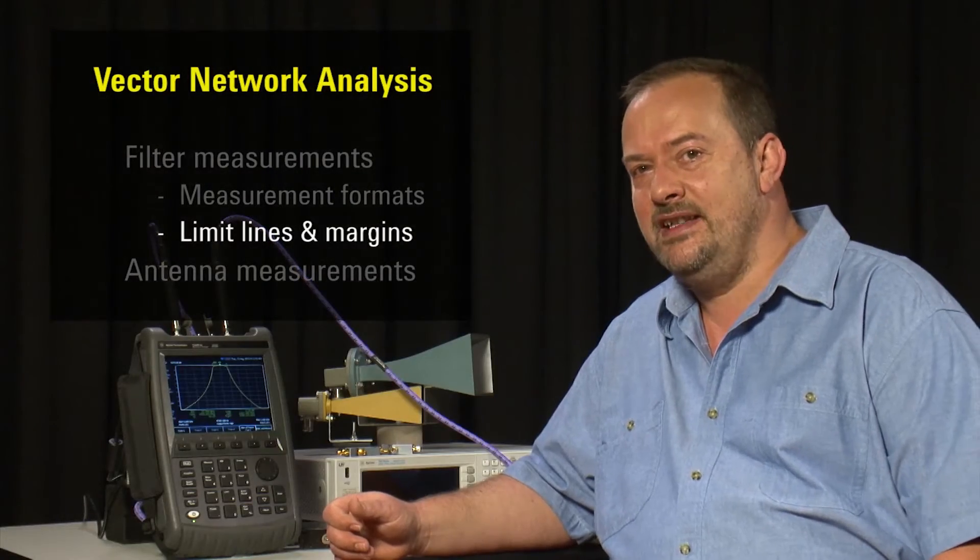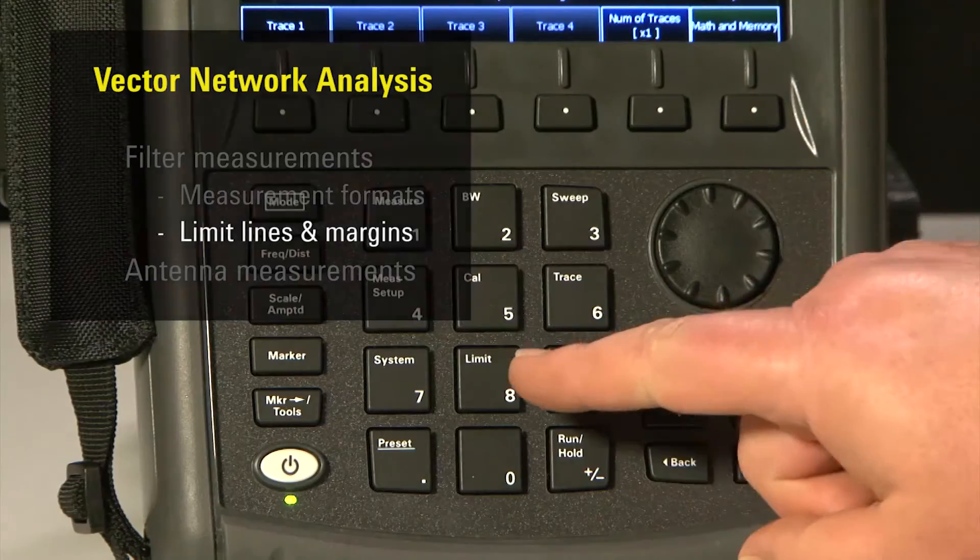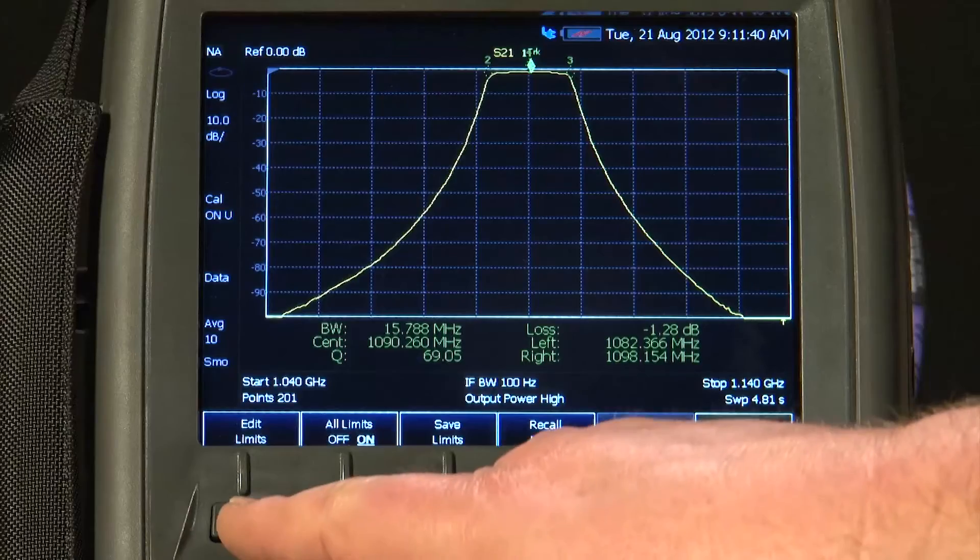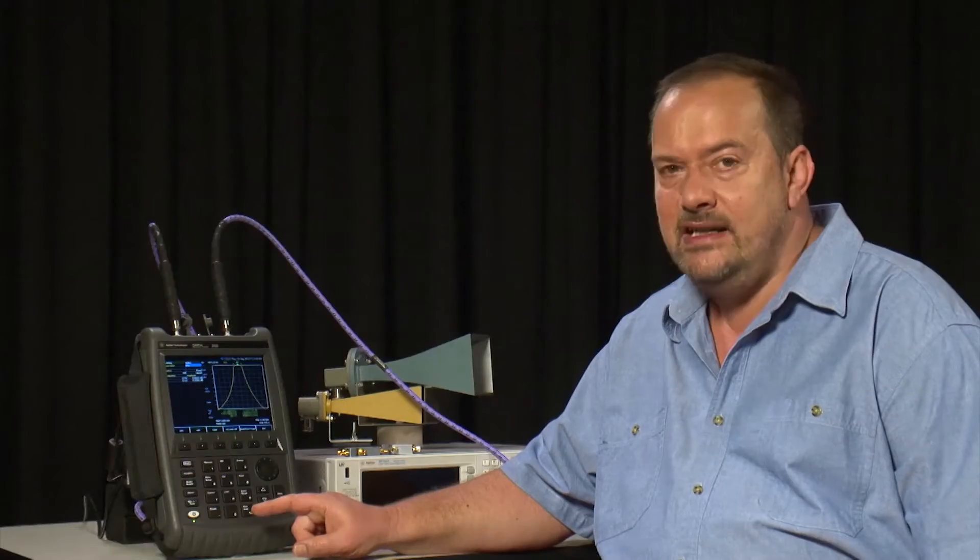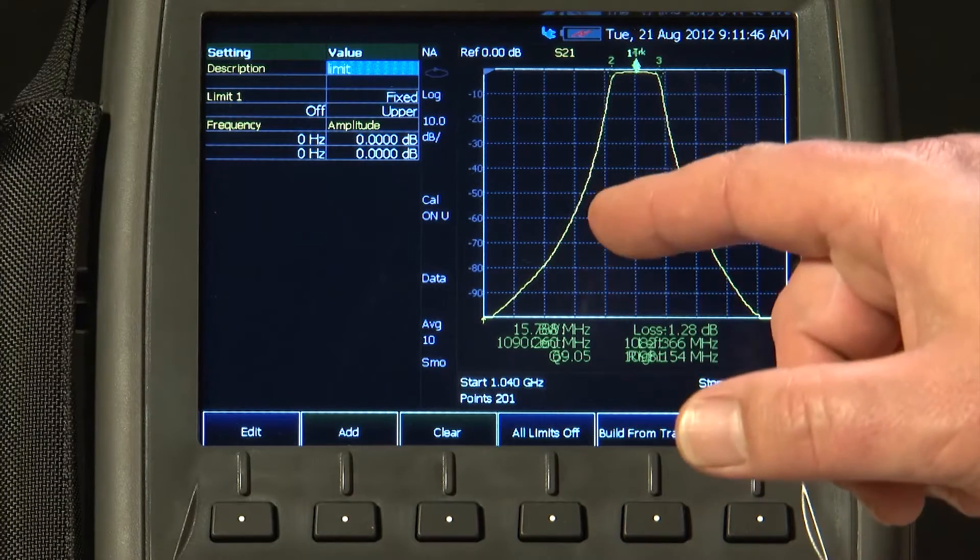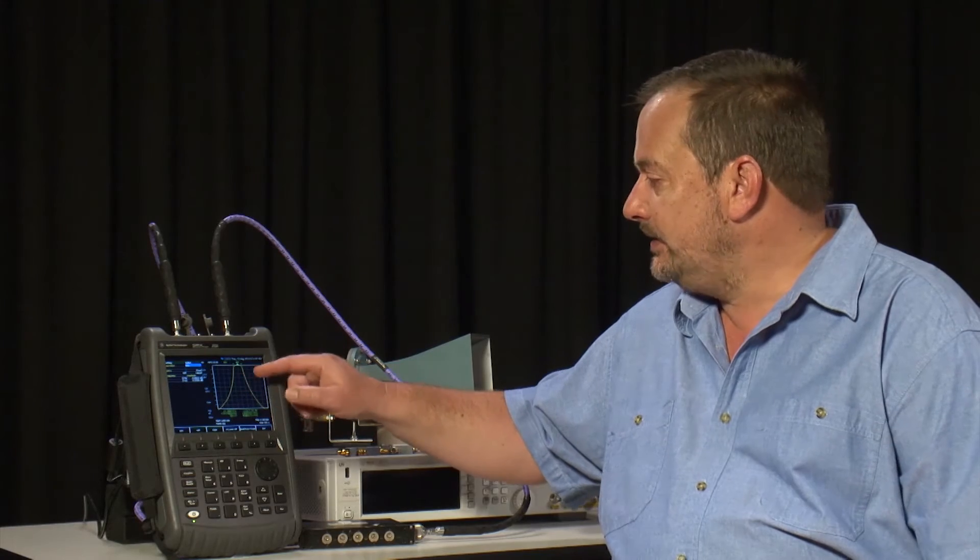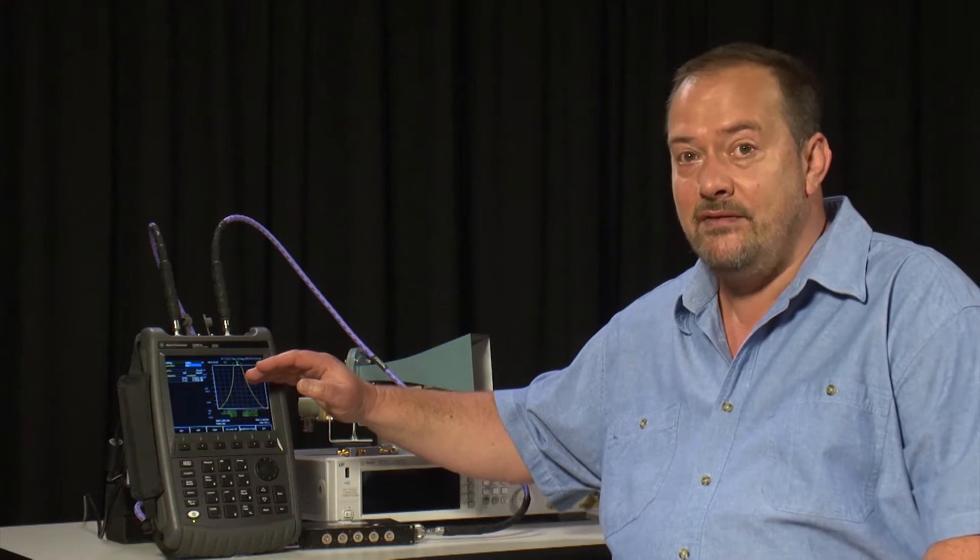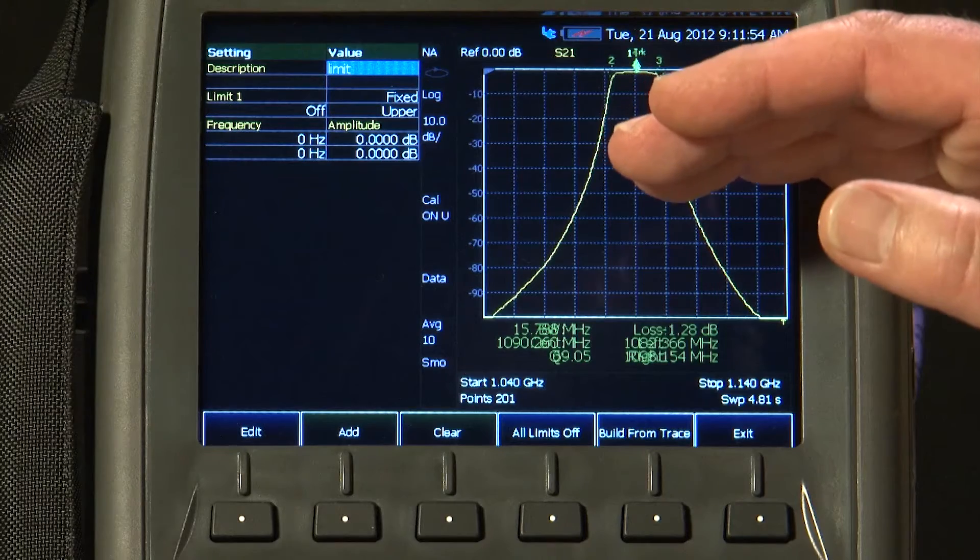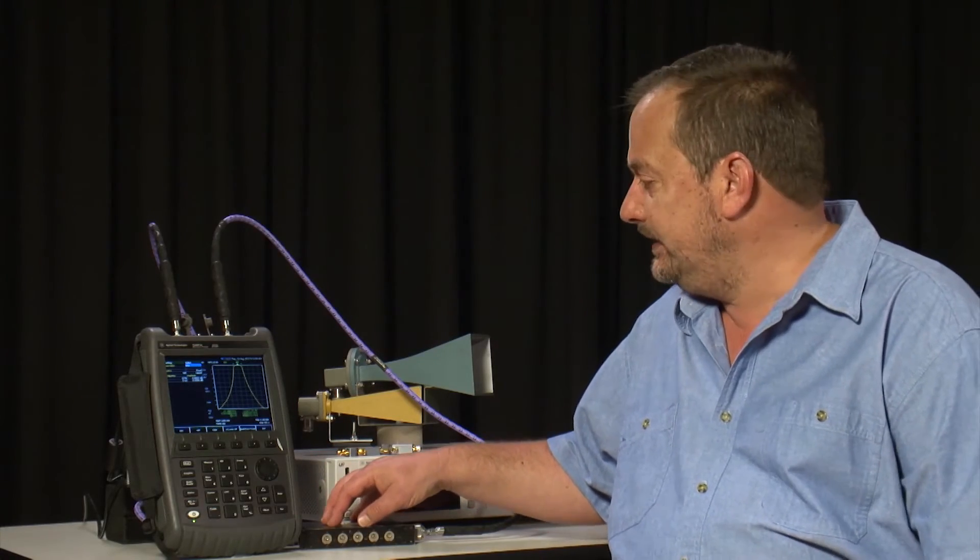What is especially surprising on a handheld vector network analyzer is the ability to set limit lines. If I press the Limit button, you can see here, when I edit the limits, we can create a table here quite easily with a series of pass and fail limits with start and stop frequencies and amplitude levels that the filter must pass in order to give the operator a pass indication or a fail indication.